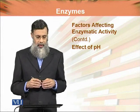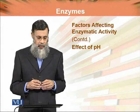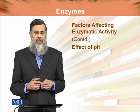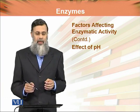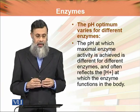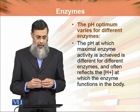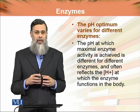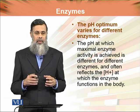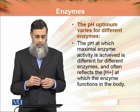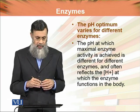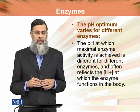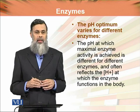We will continue with the factors affecting enzyme activity. The next factor is pH. As we have discussed, temperature is another factor affecting the activity of a particular enzyme. The pH optimum varies for different enzymes. The pH at which maximal enzyme activity is achieved is different for different enzymes and often reflects the concentration of hydrogen ions at which the enzyme functions in the body.